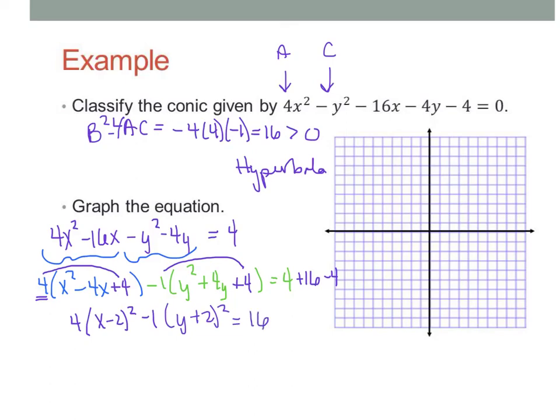All right, so let's simplify those fractions there. We're going to end up with x minus 2 squared over 4 minus y plus 2 squared over 16 equals 1. So, there we go. We're in the correct form now. So, if we graph it, our center is going to be at positive 2, negative 2.